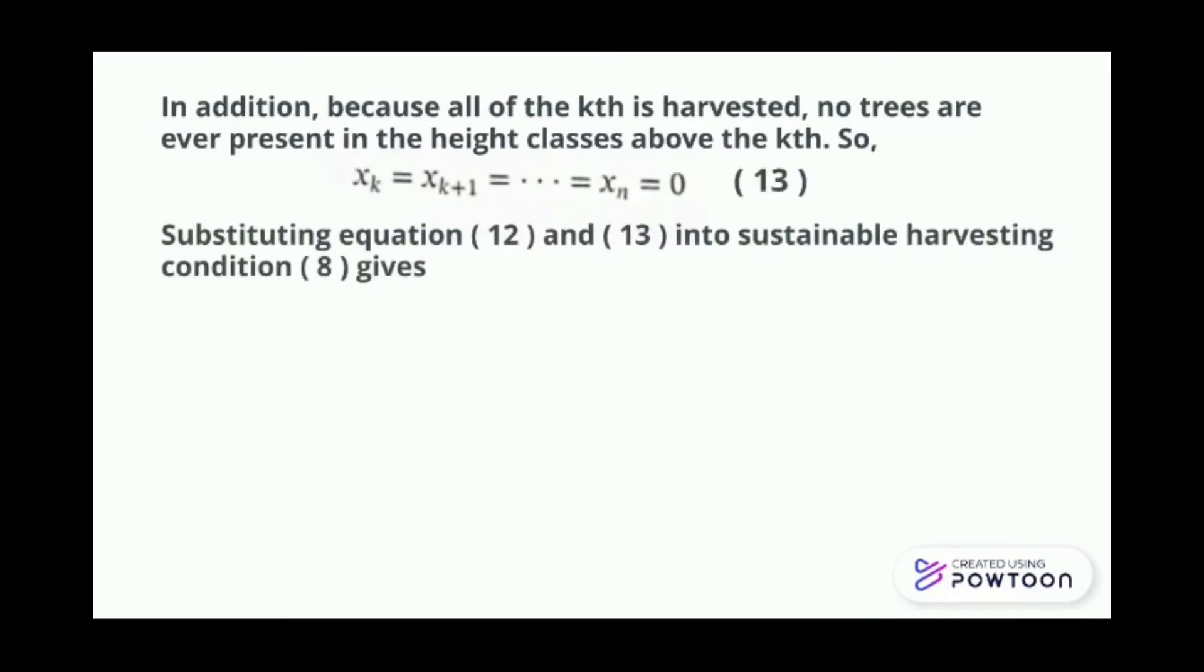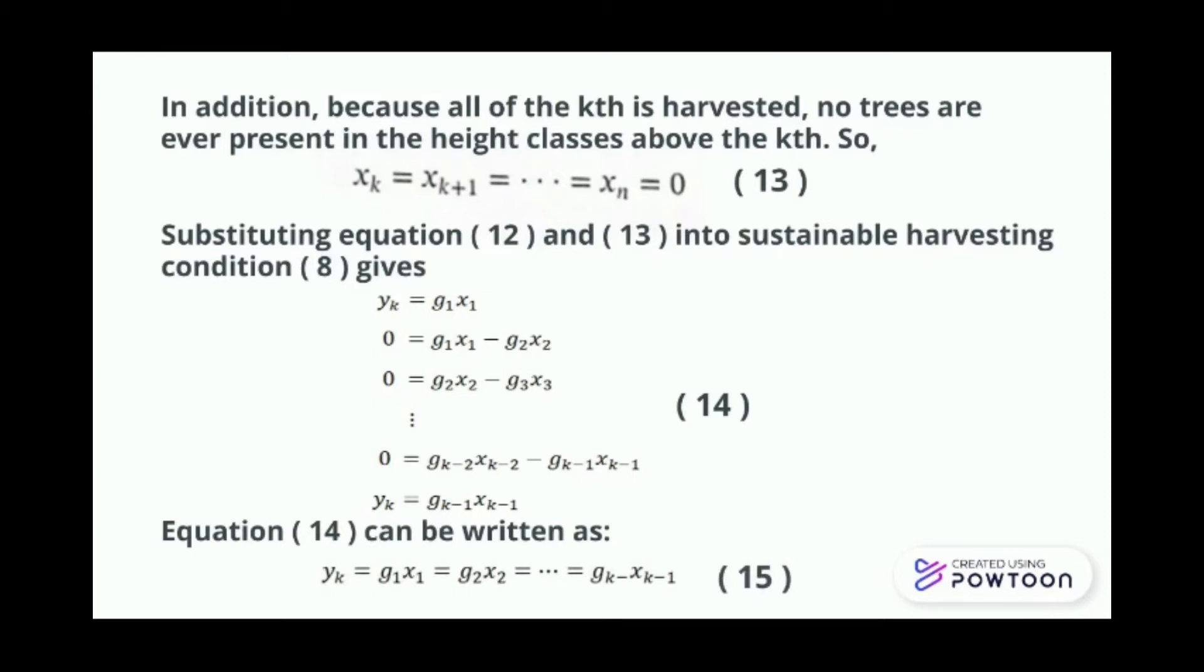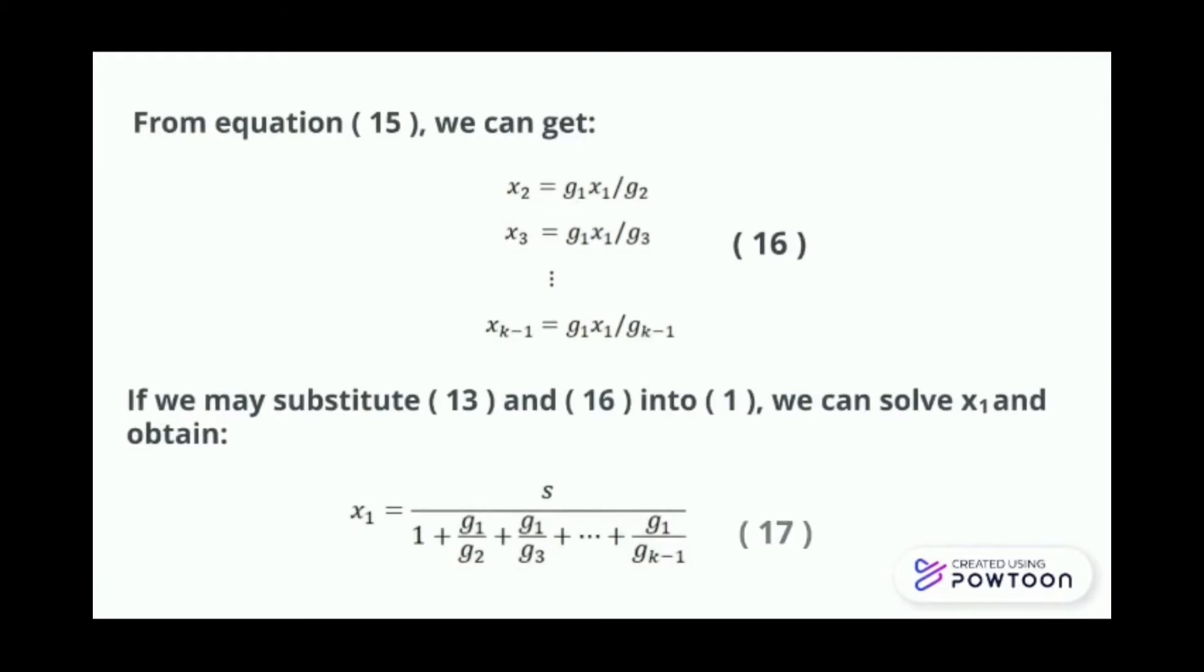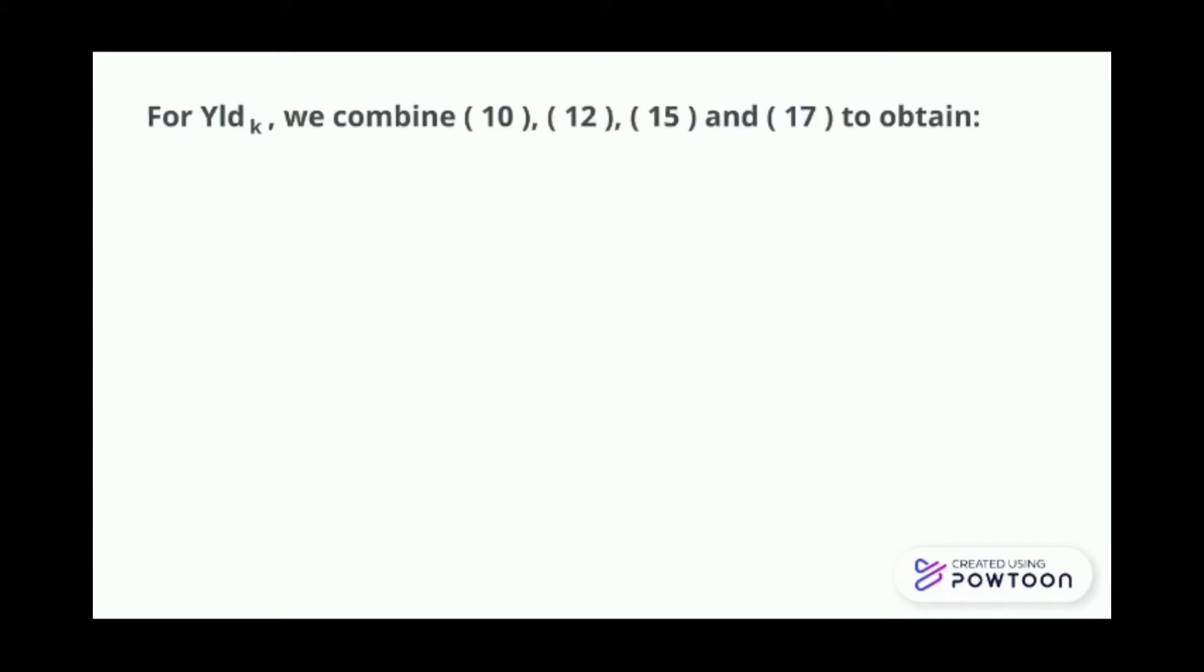We label this as equation 13. Substituting equation 12 and 13 into sustainable harvesting conditions, equation 8 gives. We label this as equation 14. Equation 14 can also be written as equation 15. From equation 15, we can get equation 16. If we substitute equation 13 and 16 into equation 1, we can solve x1 and obtain equation 17. For optimal sustainable yield, we combine equation 10, 12, 15, and 17 to obtain. And we label this as equation 18.